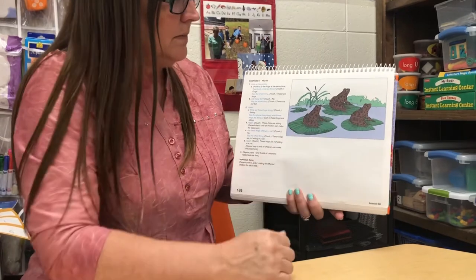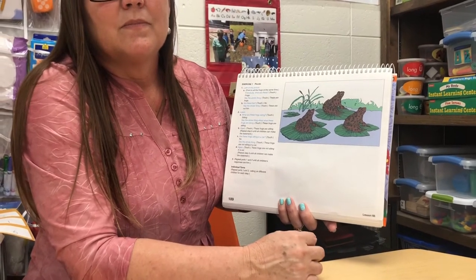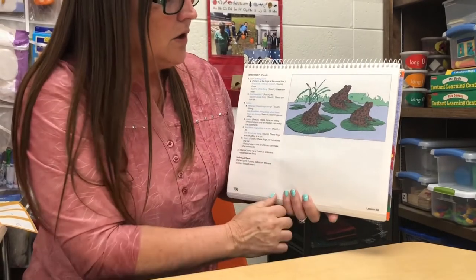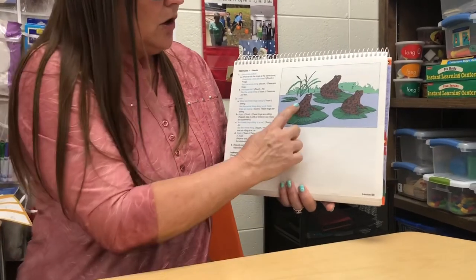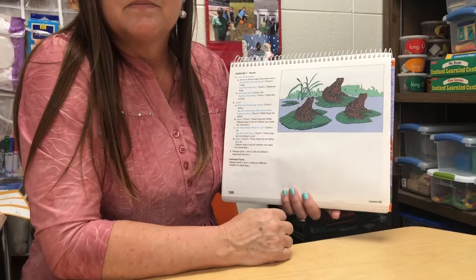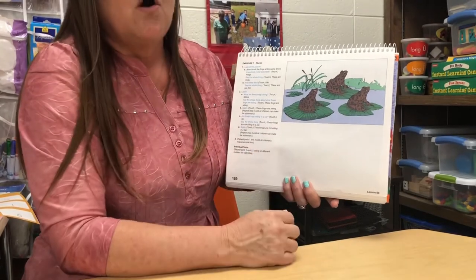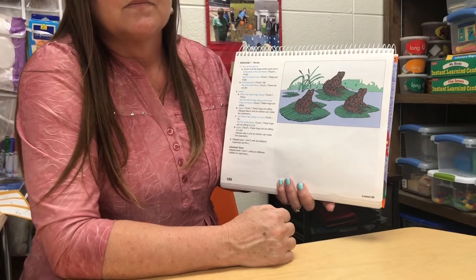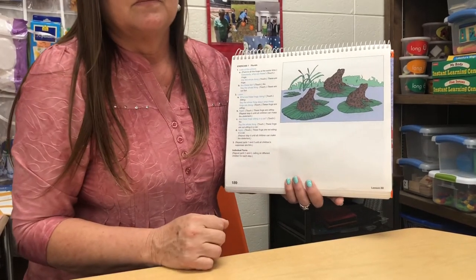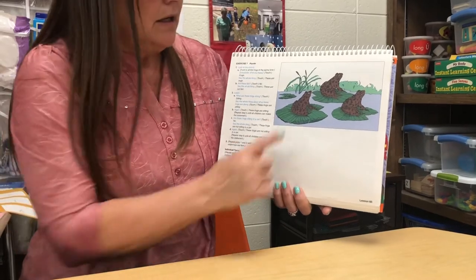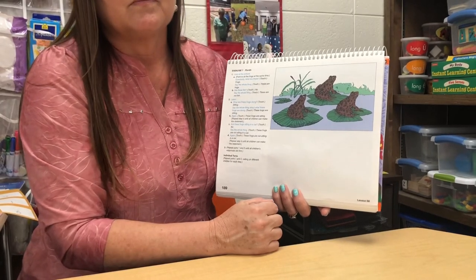What are these frogs sitting on? Do you know what this is called? Is that a pad of some sort? Yes, they're called lily pads, and these frogs are sitting on lily pads. So what are they sitting on? Lily pads. Yes. Are these frogs sitting in a train? No they are not. Let's say what these frogs are not doing: These frogs are not sitting on a train. Very good. What are these frogs doing again? Sitting on a lily pad. Let's say the whole thing: These frogs are sitting on a lily pad.